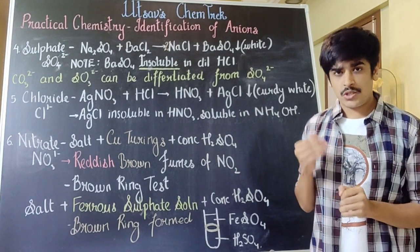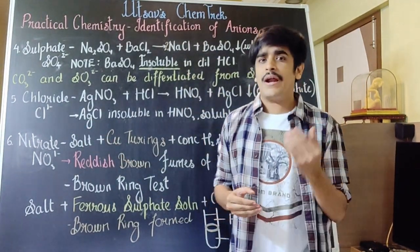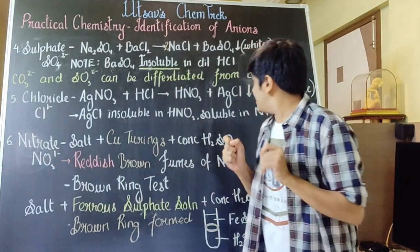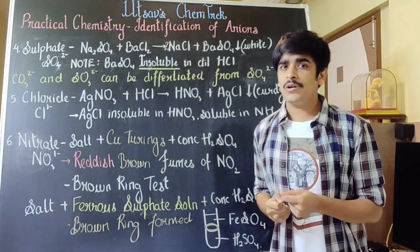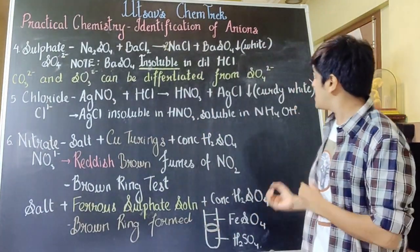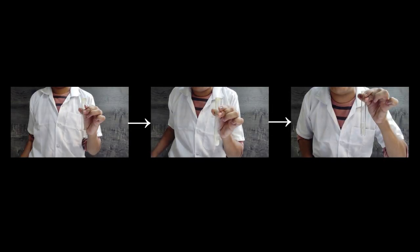The next anion we are going to identify is chloride, given by the formula Cl 1-. To identify any acid or salt that contains the chloride radical, you should use silver nitrate solution. You will get a curdy white precipitate of silver chloride. Silver chloride is a curdy white precipitate that does not dissolve in HNO3, but it is soluble in ammonium hydroxide, given by the formula NH4OH. Whenever a substance containing the chloride radical is added to silver nitrate solution, it first gives a curdy white precipitate, which completely dissolves in ammonium hydroxide, giving a colorless solution.